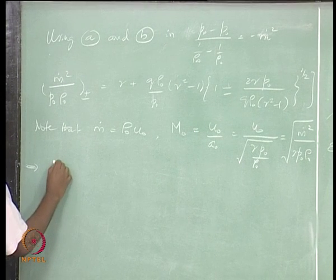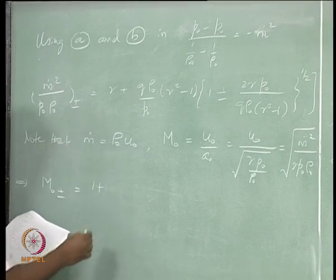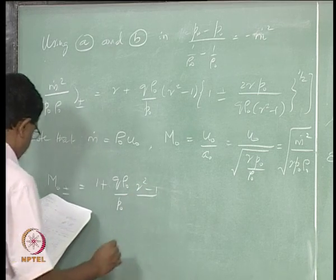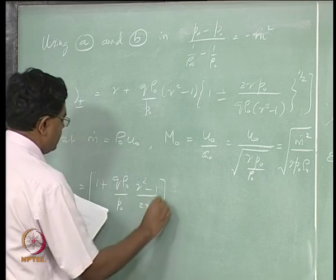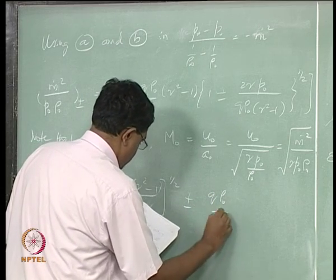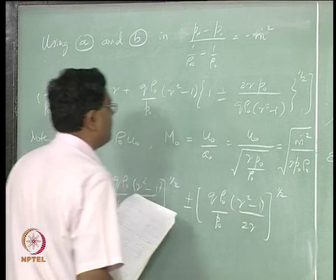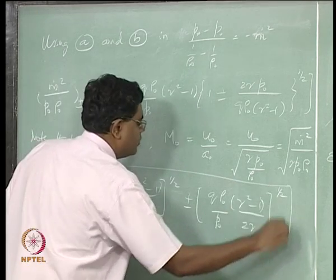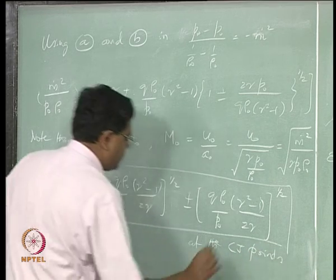This gives: M₀± = [1 + Qρ₀/(P₀) · (γ²−1)/(2γ)]^(1/2) ± [Qρ₀/P₀ · (γ²−1)/(2γ)]^(1/2). So at the CJ points, the incoming Mach number takes this form depending on the sign chosen for the UCJ or LCJ point.